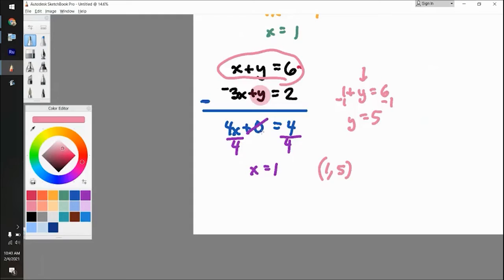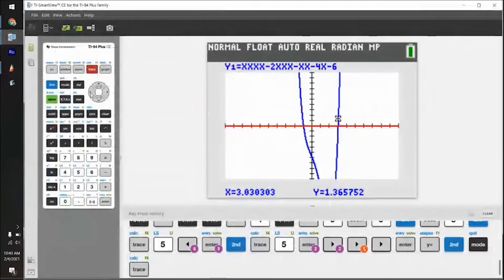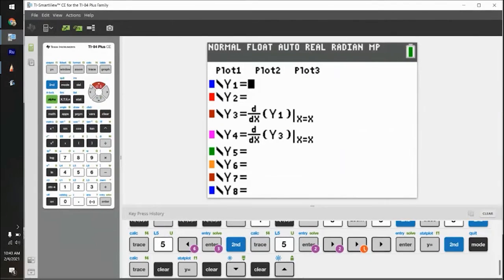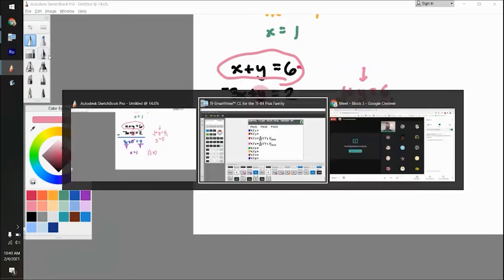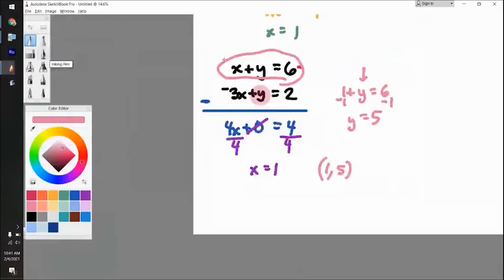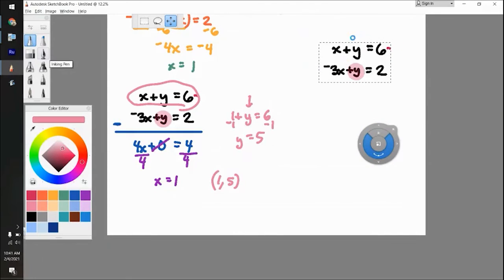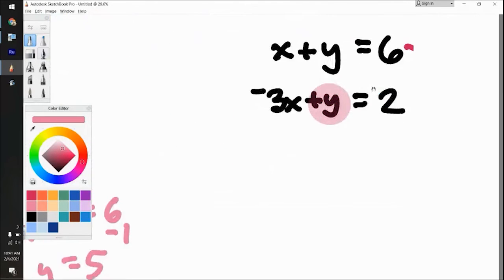Another way you can do it is if you graph them. So that's what I'm going to show you right now. And this comes in handy every now and then. The problem with graphing is you have to have it as y equals something. So right now, the equations are not y equals. So what you would have to do is solve both of these for y.